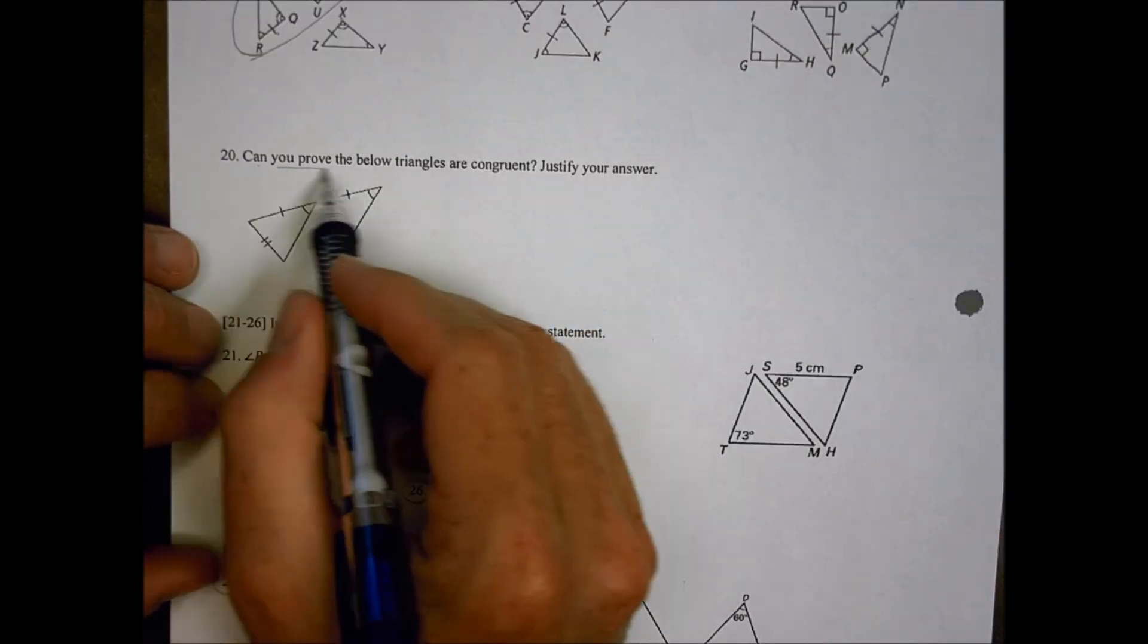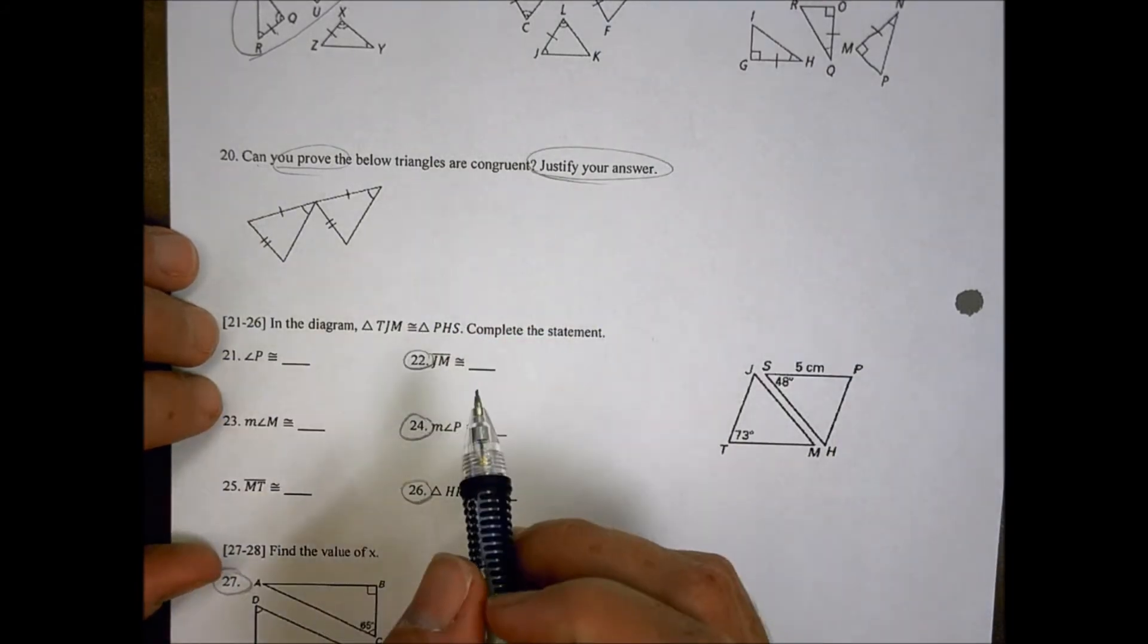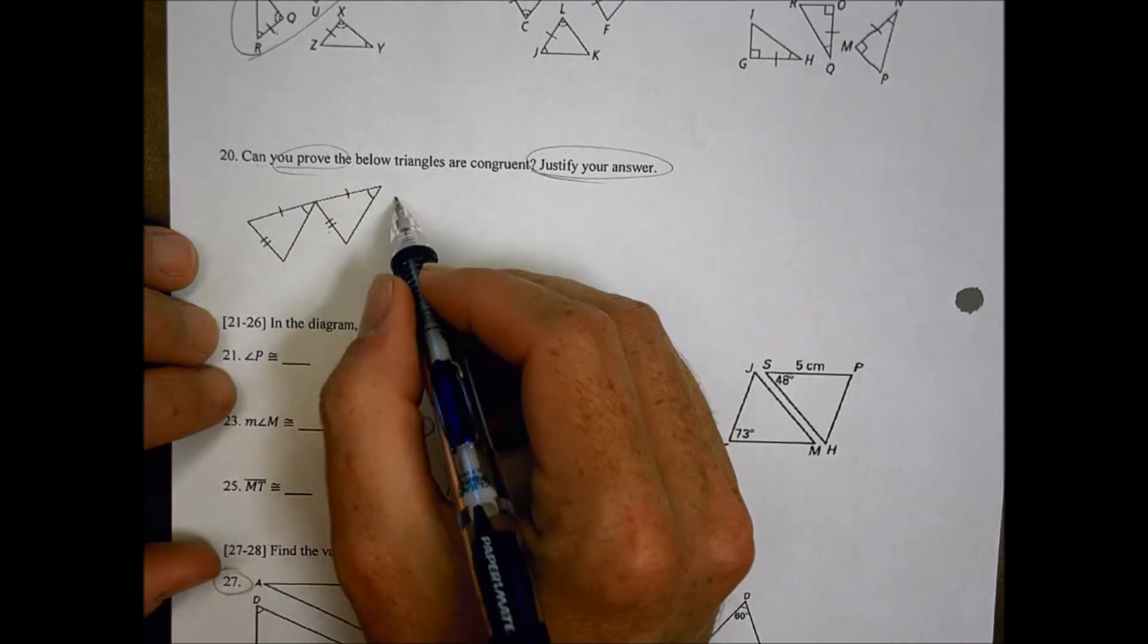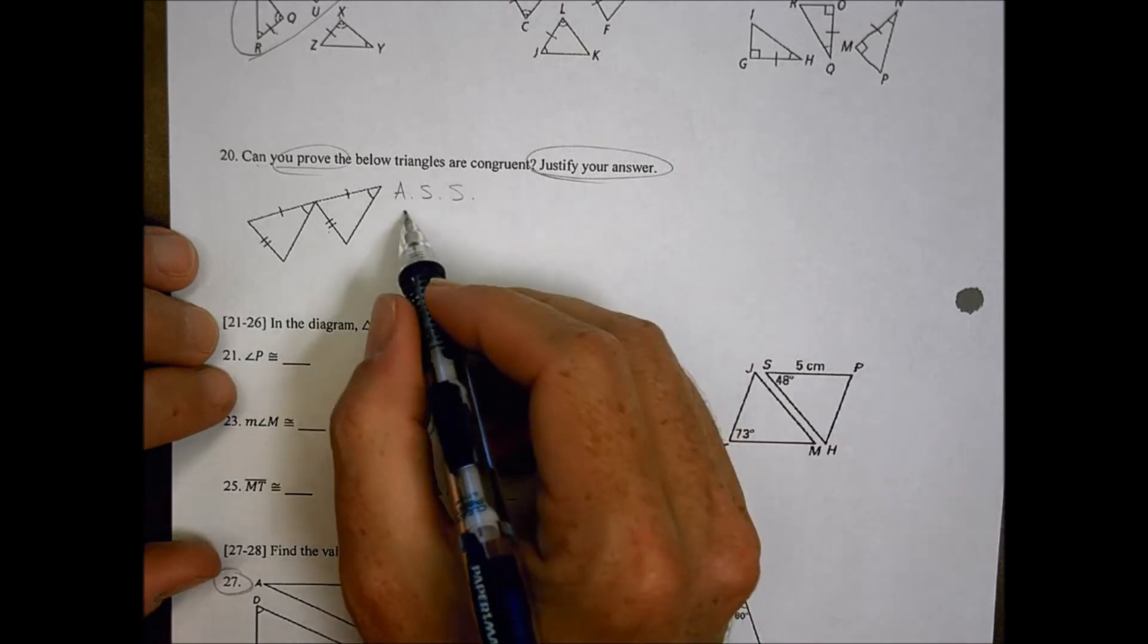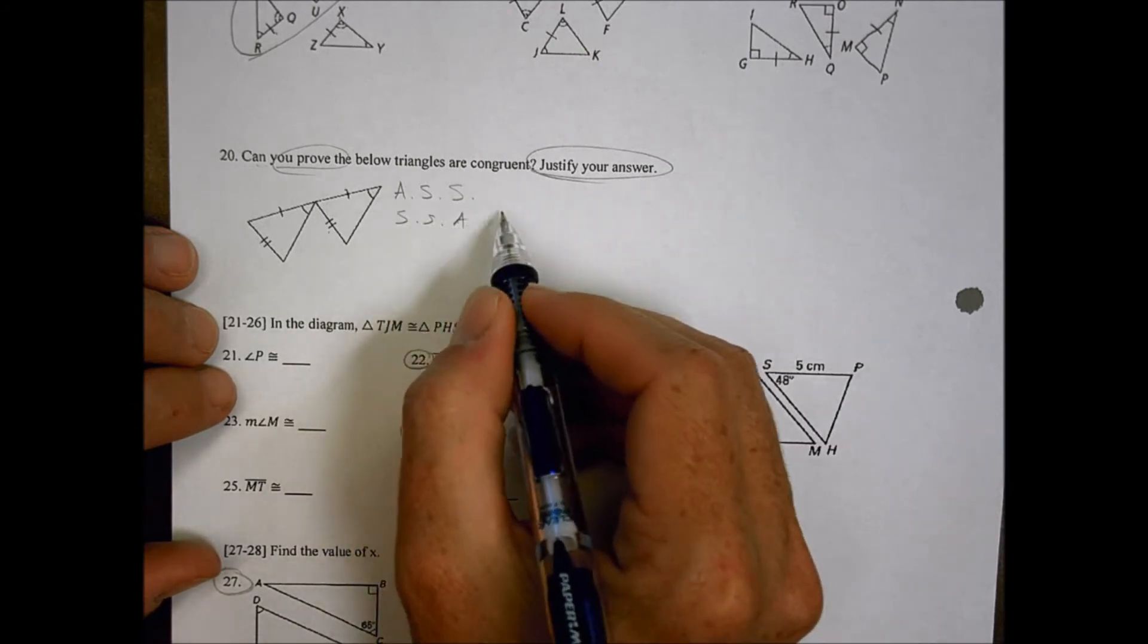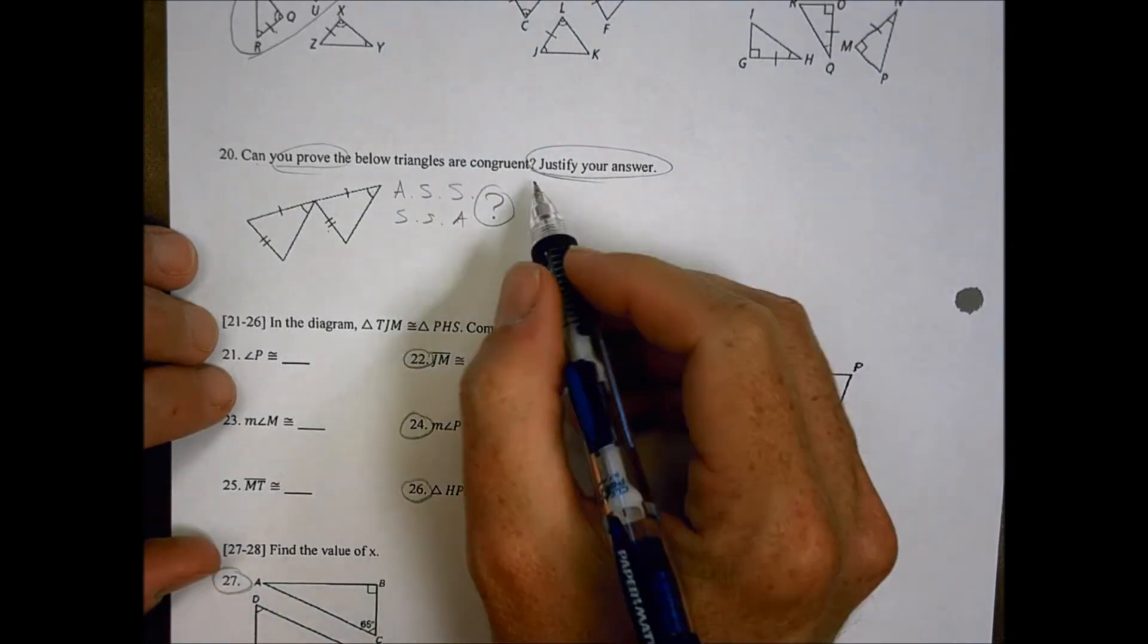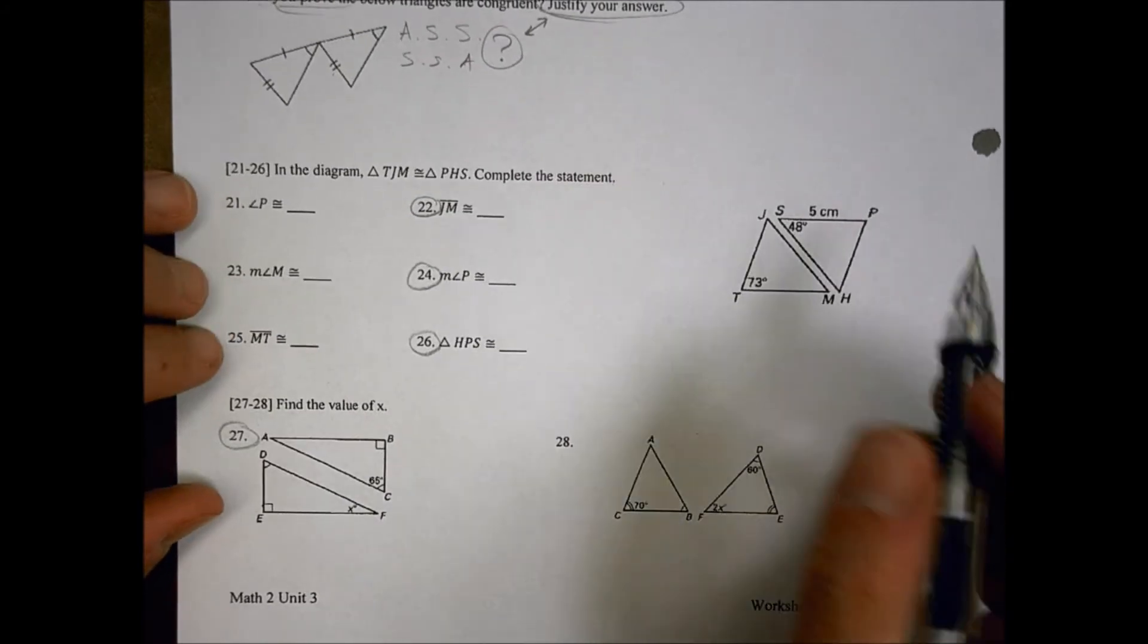Number 20 is can you prove it, and you have to justify your answer. So you can write something down, whether you can prove that's true. From what you're given, you have, again, angle, side, side, which we've talked about already as not being one of the options that you can do, side, side, angle. So the question is can you prove that that's congruent with the information that's there. That you'd have to decide, yes or no, and justify your answer.